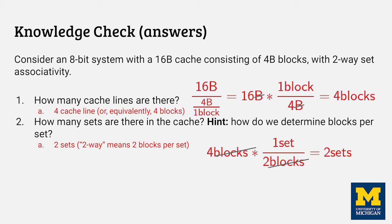Question two is asking if you understand what it means to be two-way. Remember that if you have a k-way cache, then you have k blocks per set. So if you have two blocks per set, and from question one we know that there are four blocks total in the cache, then we must have two sets.